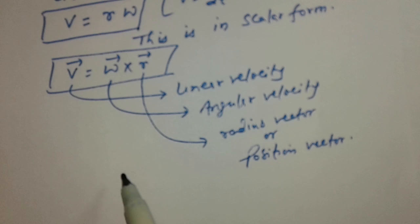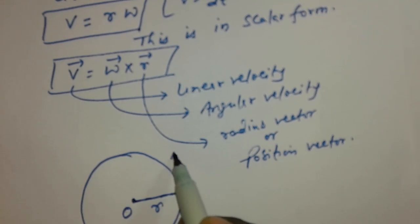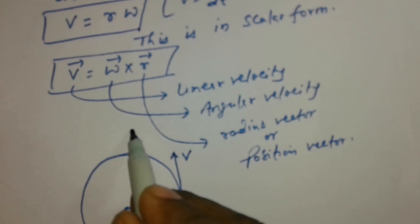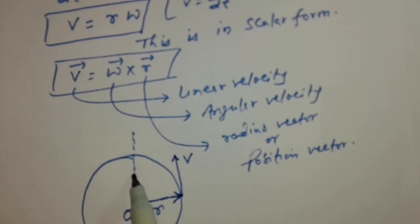So suppose a particle is moving on the circular path of a fixed radius R. This is center O, this is linear velocity V, this is position vector R, and this is angular velocity rotation, vertically upward. So this omega cross R must be equal to V.